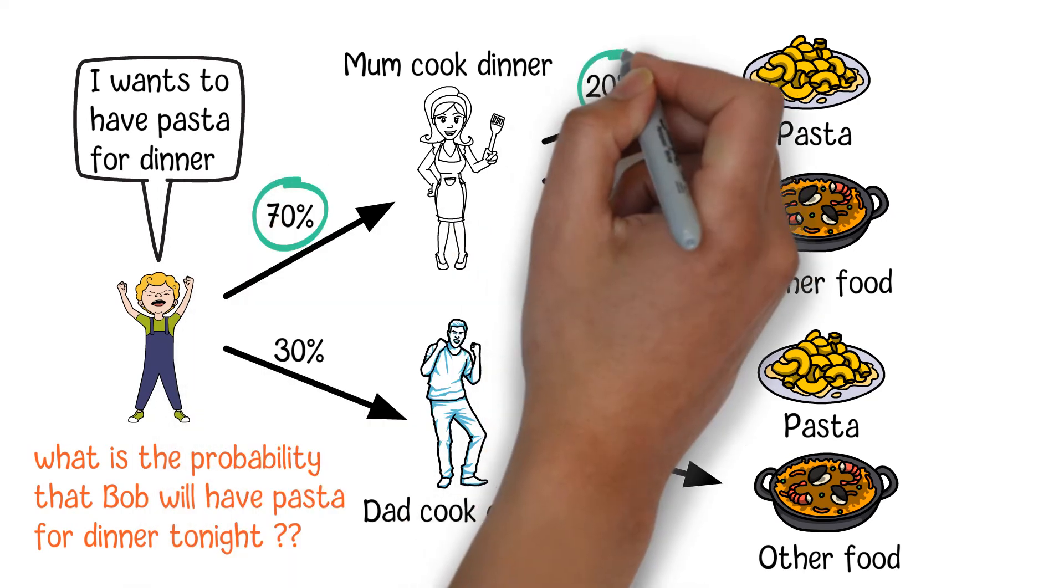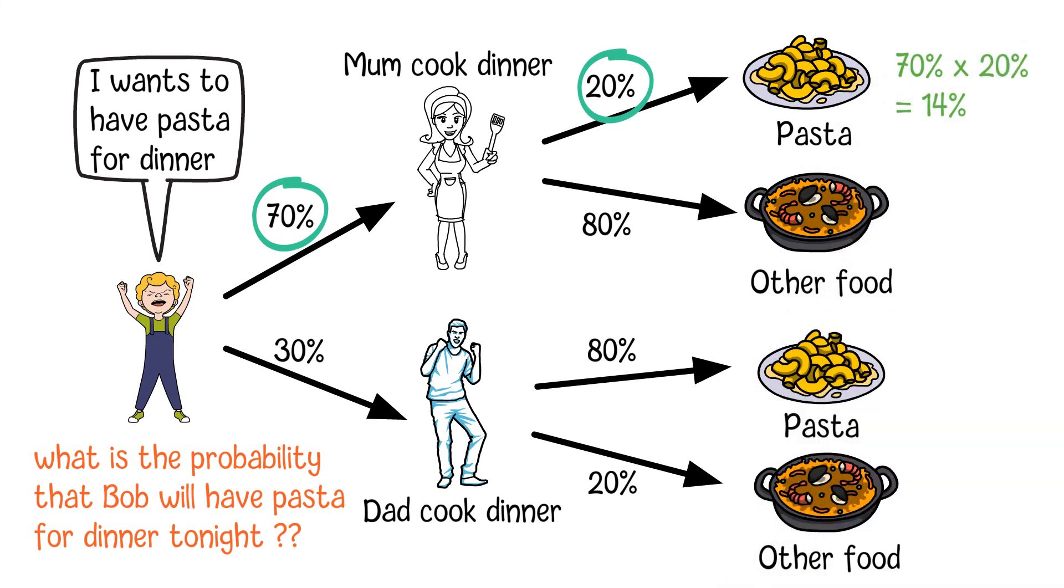If Bob's mom cooks dinner, Bob will have a probability of 70% multiply by 20% equals 14% to have pasta tonight. If Bob's dad cooks dinner, Bob will have a probability of 30% multiply by 80% equals 24% to have pasta.